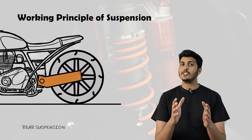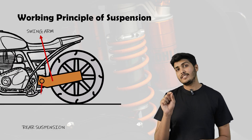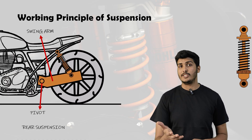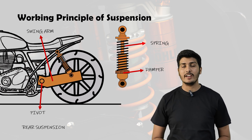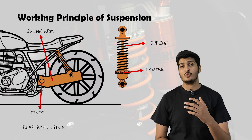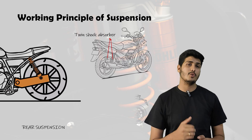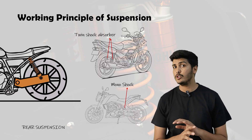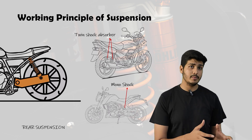Now let's move to the rear of the bike. The first component we add here is the swing arm, which connects the rear wheel to the bike frame. It has a pivot that helps the wheel move up and down over a bump — that's why it's called a swing arm. Now we add the rear suspension unit, which includes a spring and damper. The spring supports the weight of the rider and absorbs the shock when the rear wheel moves. The damper, filled with oil and gas, controls the spring movement so it doesn't bounce uncontrollably. Some bikes use twin shock absorbers, one on each side, common on commuter and classic bikes. Others, especially performance bikes, use a single monoshock mounted at the center. Both do the same job, but the design varies based on the bike's purpose and weight distribution.